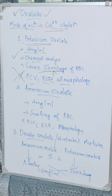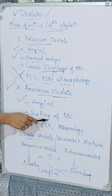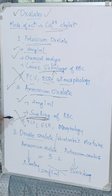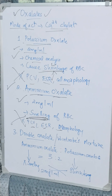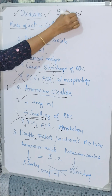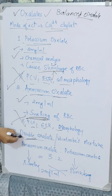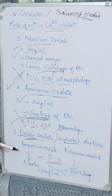Ammonium oxalate also uses a concentration of 2 milligrams per ml, but it causes swelling of RBCs, so it also cannot be used for PCV, ESR, and cell morphology. The shrinking effect of potassium oxalate and the swelling effect of ammonium oxalate are balanced by double oxalate — also known as Wintrobe's mixture or balanced oxalate. It is prepared by mixing ammonium oxalate and potassium oxalate in the ratio 3:2. It can be used for hemoglobin estimation, PCV, ESR, and morphological studies at a concentration of 2 milligrams per ml.